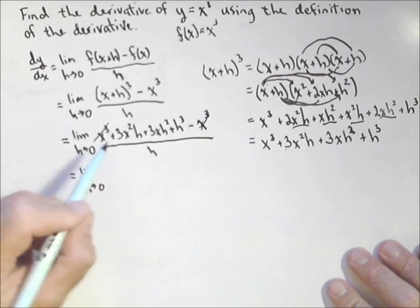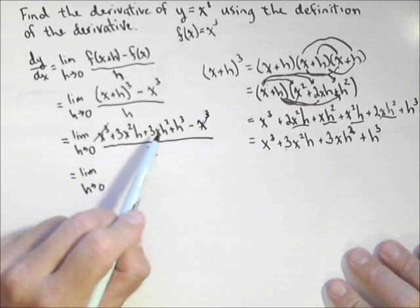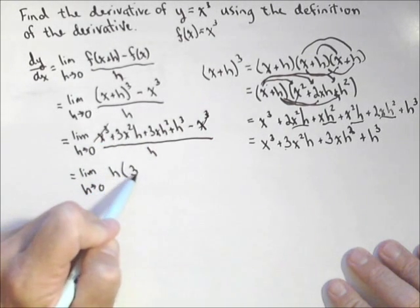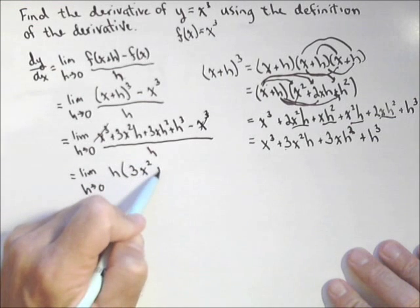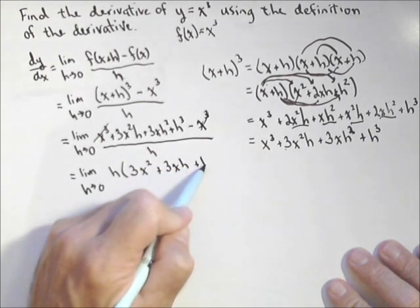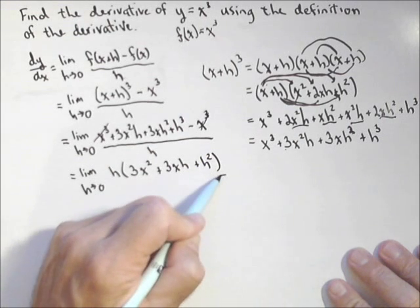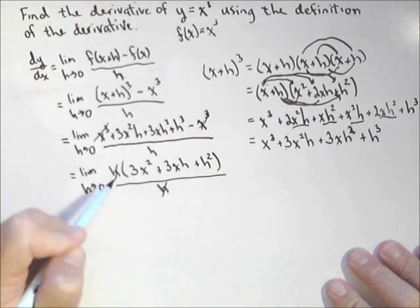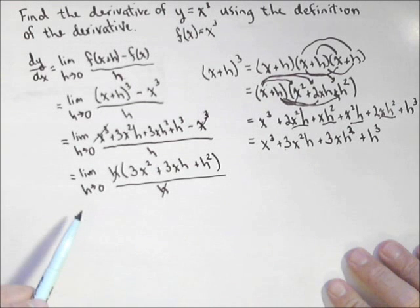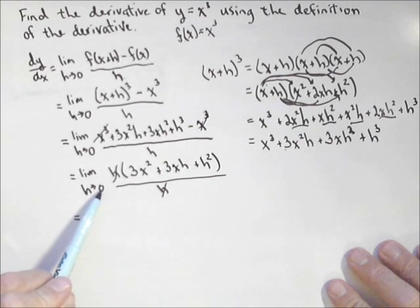So what I'm going to do is in the numerator, I'm going to factor one h out of these three terms. So that gives me h times (3x² + 3xh + h²) all over h. And there is my cancel. I now no longer have an h in the denominator, so I can now plug in my h going to zero.